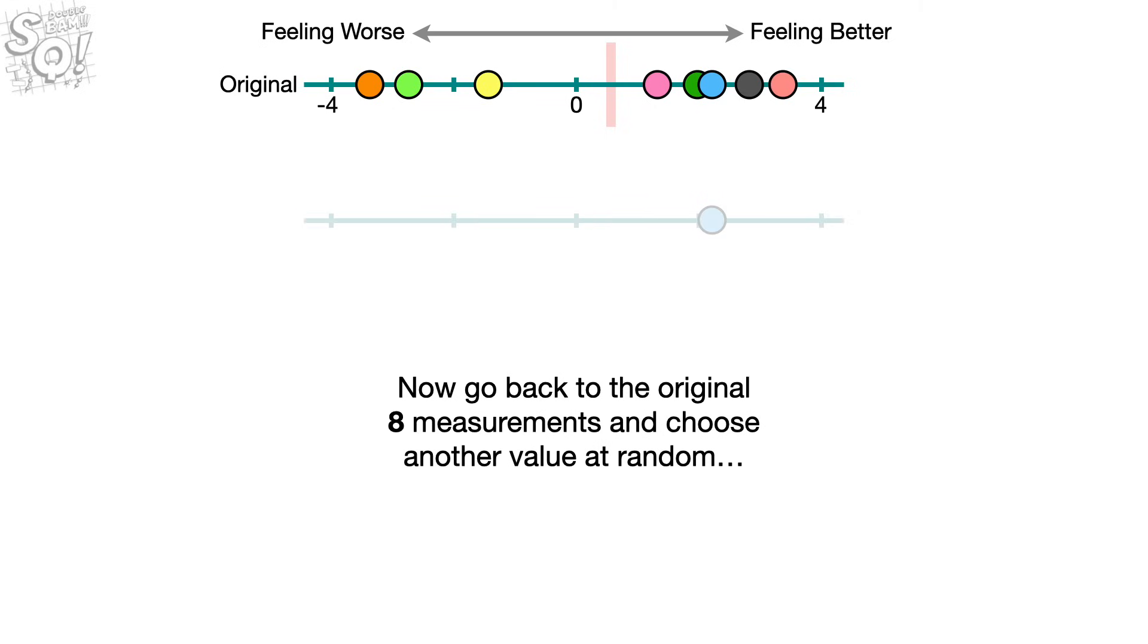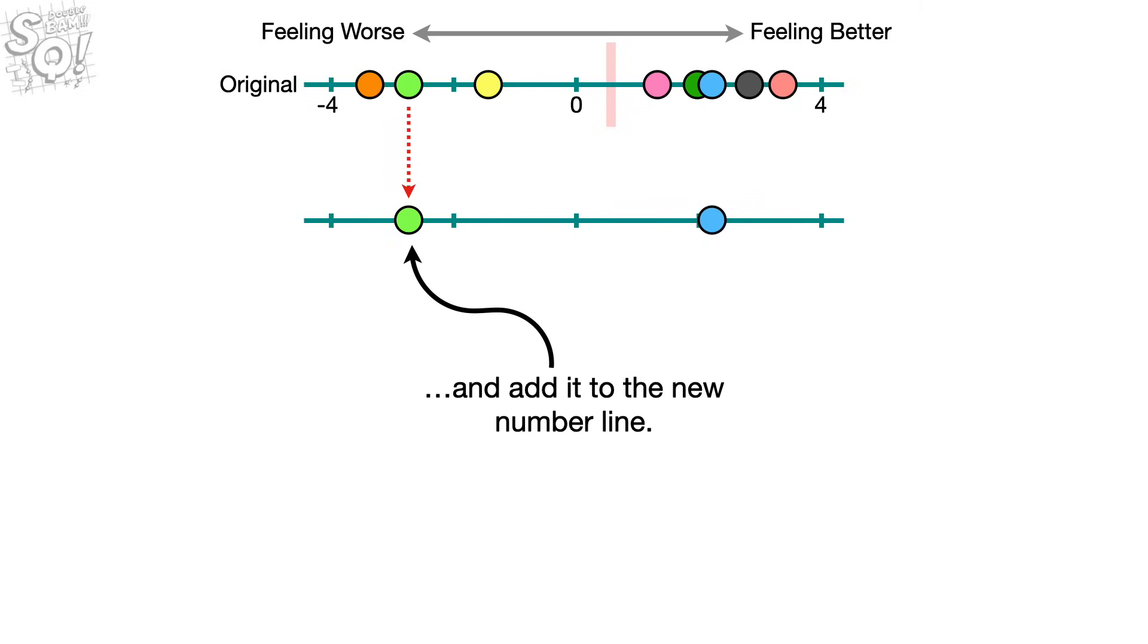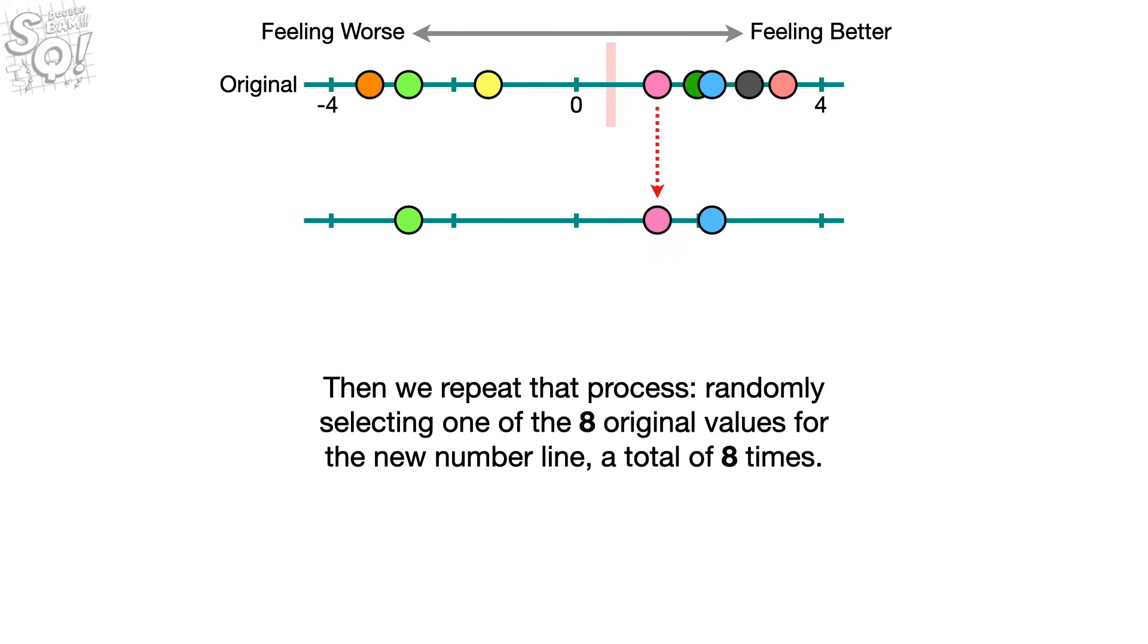Now, go back to the original eight measurements and choose another value at random, and add it to the new number line. Then we repeat that process, randomly selecting one of the eight original values for the new number line a total of eight times.